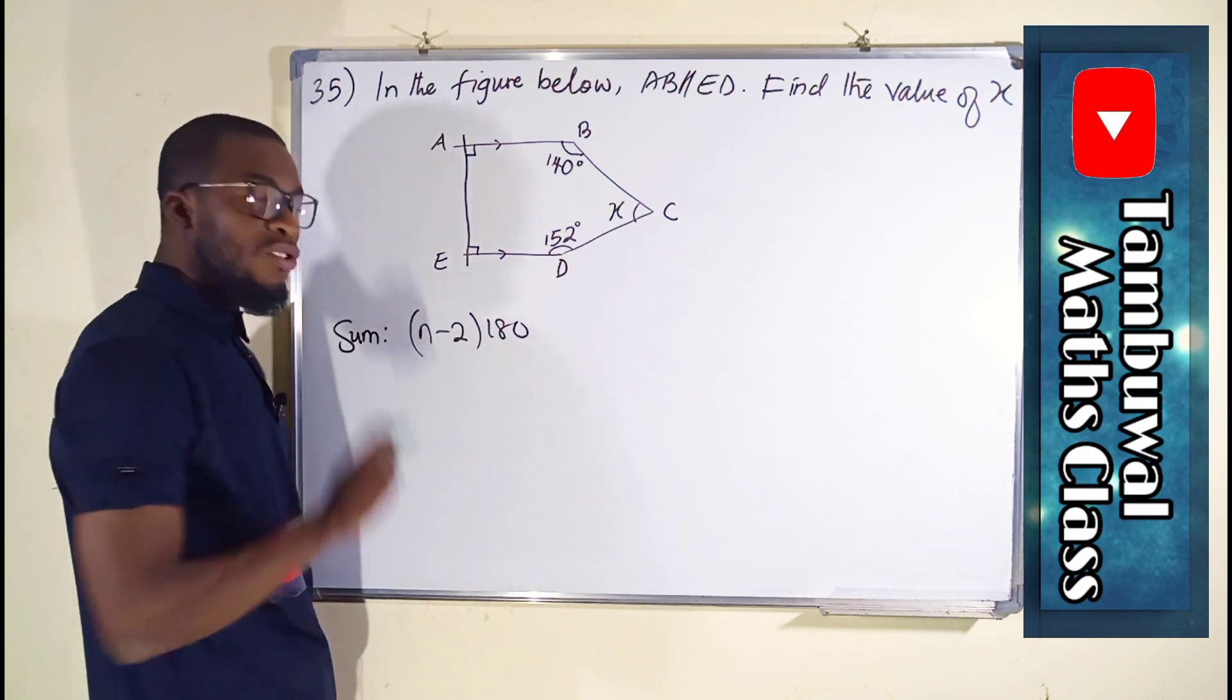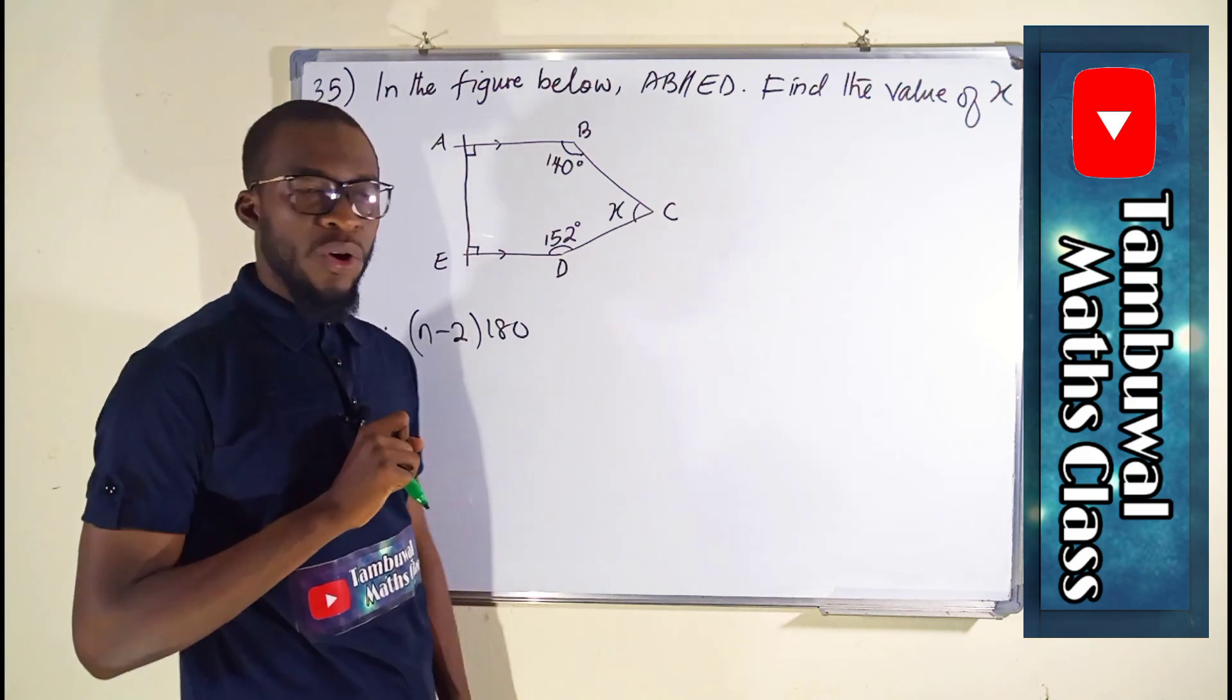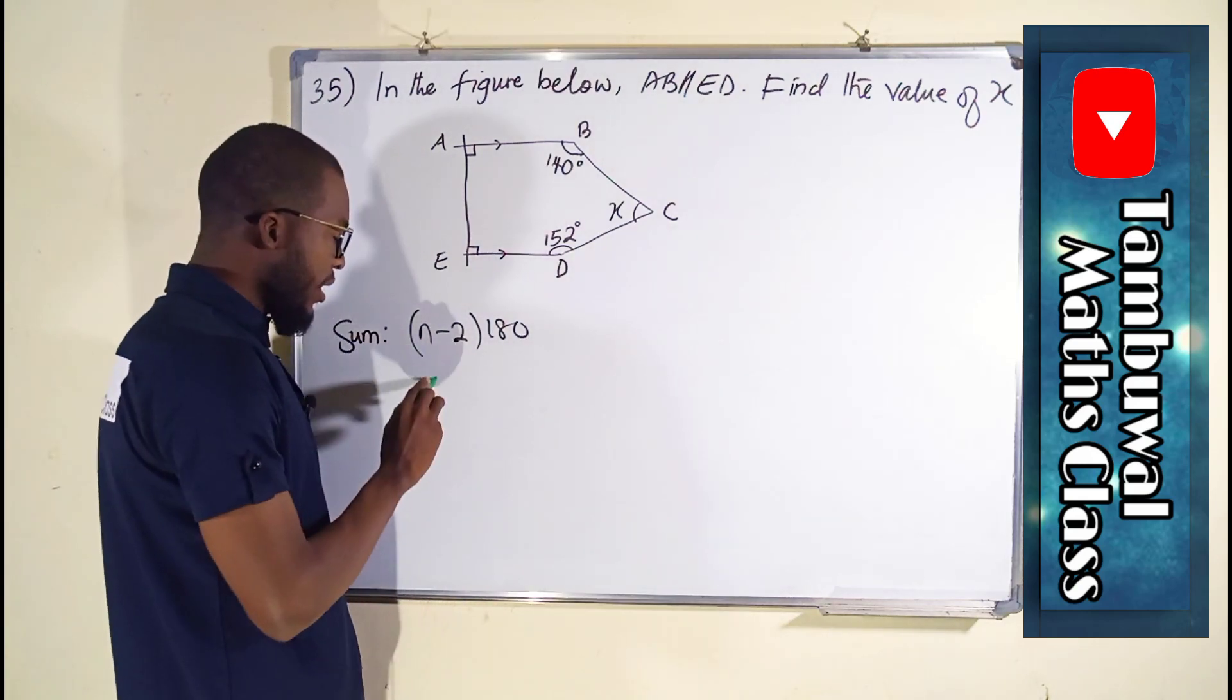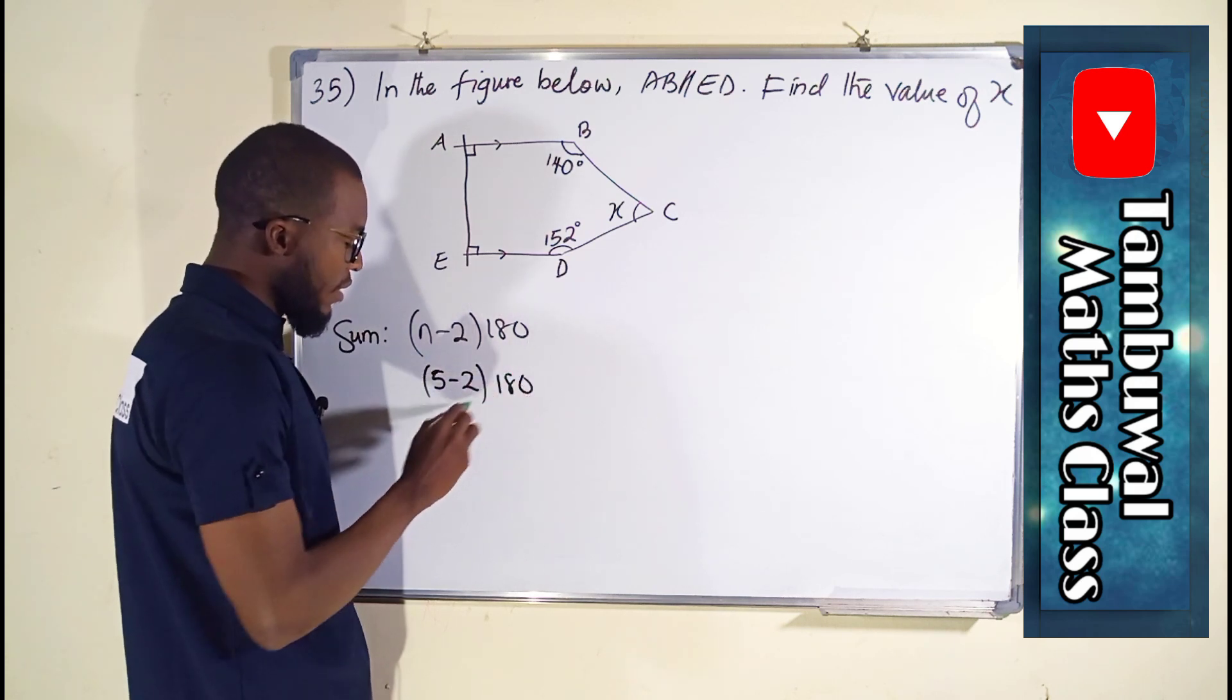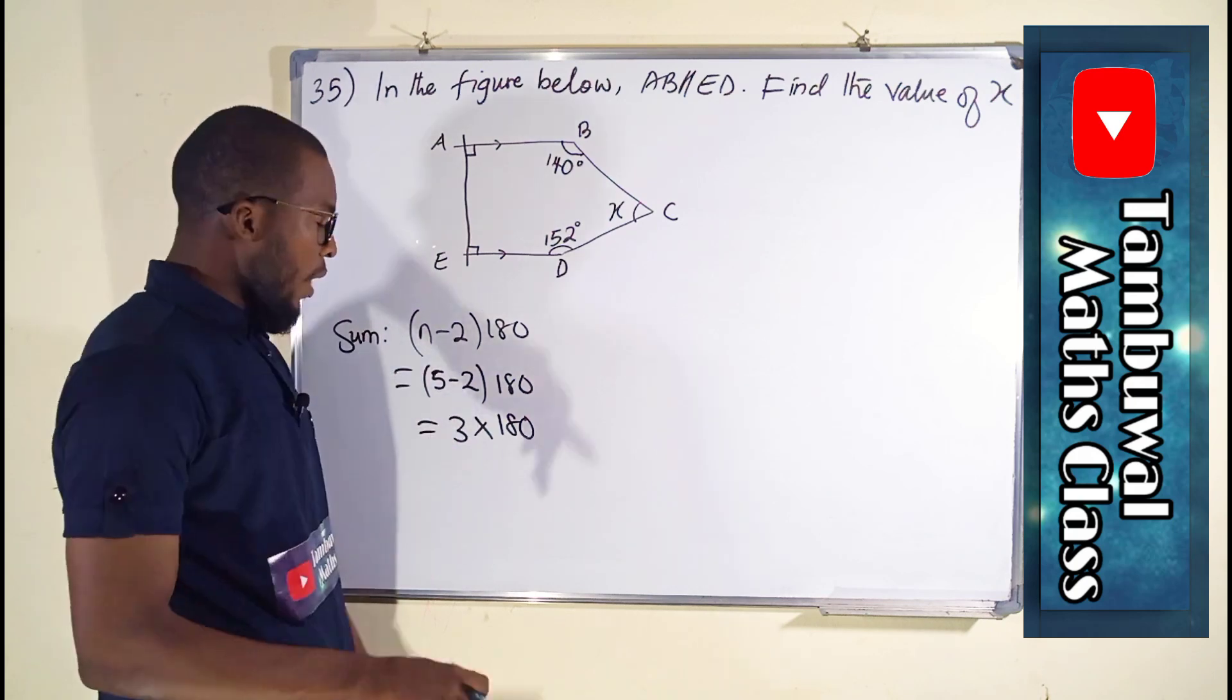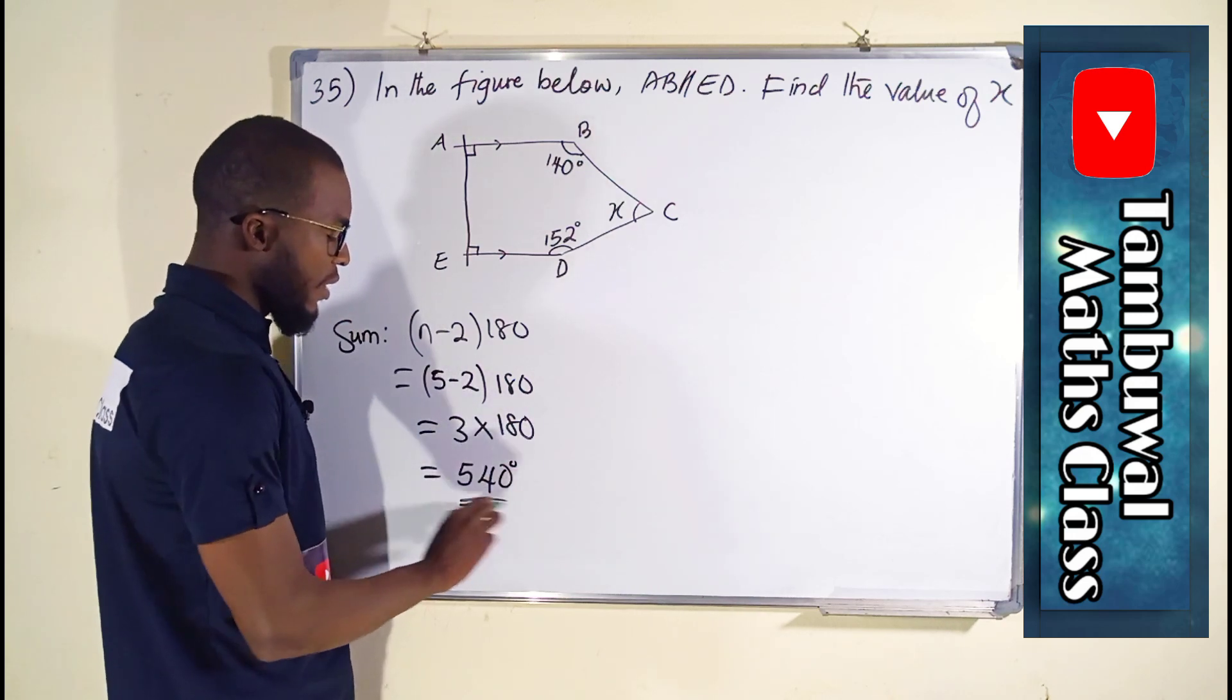For sum of the interior angles, where n stands for the number of angles in that polygon. Here we have 1, 2, 3, 4, 5, it means that our n is equal to 5. Then 5 minus 2 times 180 is equal to 3 times 180, and 3 times 180 is equal to 540 degrees.